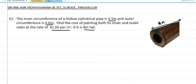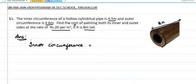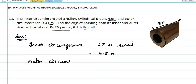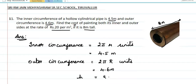They are going to paint both the outer and inner surface. We have to find the cost of painting. First, they have given inner circumference, which is 2πr, so inner circumference: 2π small r is given as 4.5 meter. Same way, outer circumference is 2π capital R, and that is given as 4.6 meter, and height is given as 8 meter.